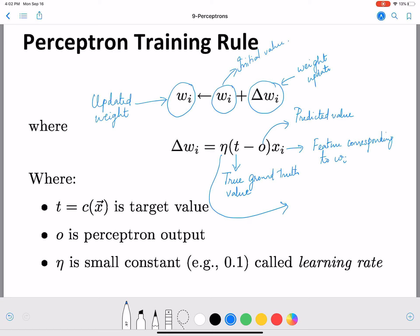Now η is the learning rate. Remember, we already looked at learning rate when we learned logistic regression. Learning rate is a small